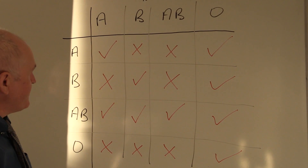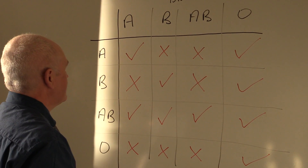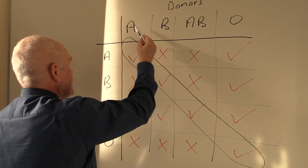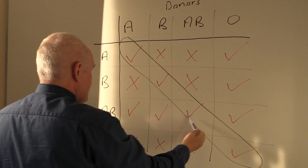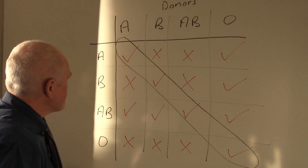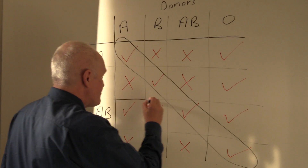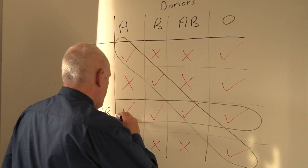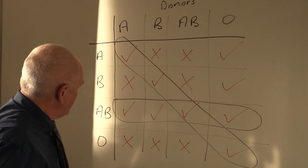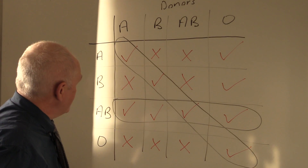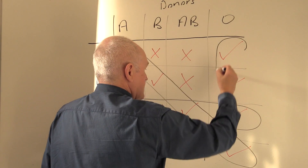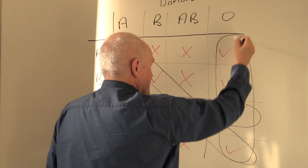What this means is that in theory everyone can give to their own blood type: A can give to A, B can give to B, AB to AB, and O can give to O, just looking at the ABO system. Additionally, A, B, AB, and O can all give to AB. And in theory, O can give to anyone, so O is described as the universal donor.